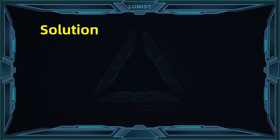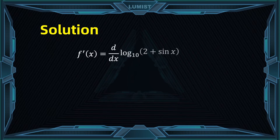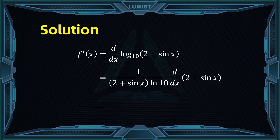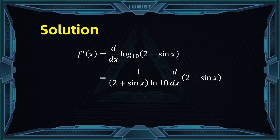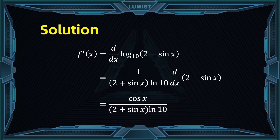Our first step is to write it as a derivative of log of (2 + sin x) base 10. The second step gives us 1 over (2 + sin x) times ln of 10, multiplied by the derivative of the inside, which is the derivative of (2 + sin x). The third step combines these: the result is cos x over (2 + sin x) times ln of 10.